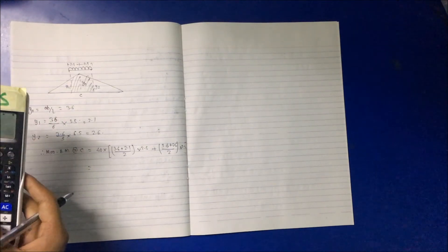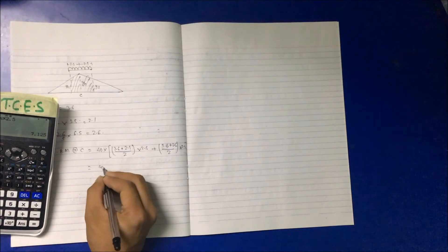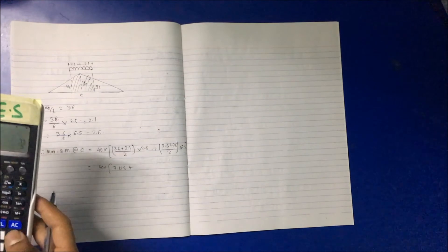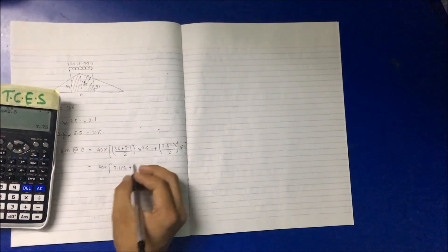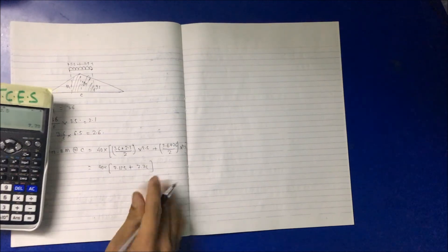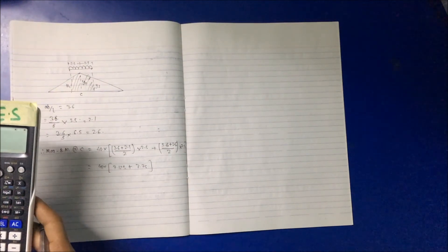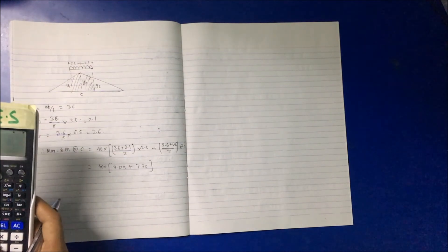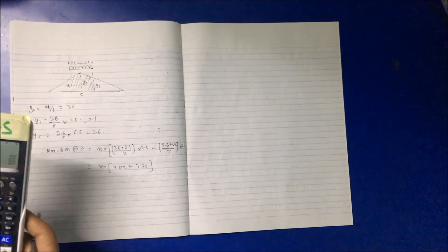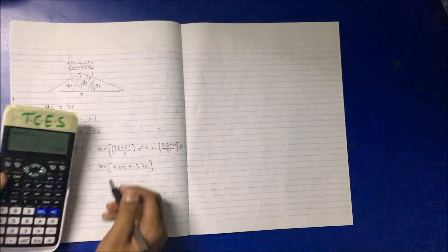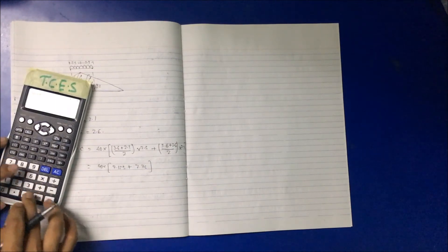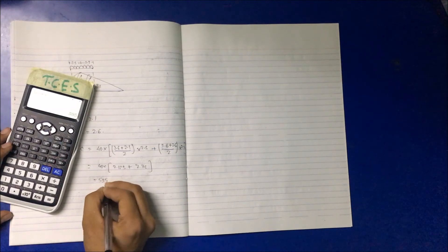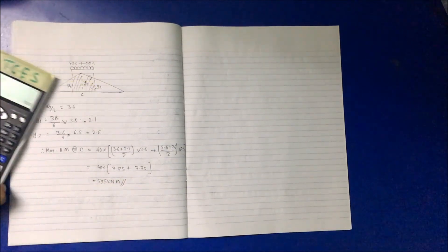We can calculate: 3.6 plus 2.1 divided by 2 into 2.5, so 40 multiplied by 7.125, plus 3.6 plus 2.6 divided by 2 into 2.5, this comes as 7.75. Let me check: 3.6 plus 2.6... 3.6 plus 2.1 divided by 2 plus 1 by 2.5 is 7.125. Multiply by 40: 595 kN·m, which is correct.